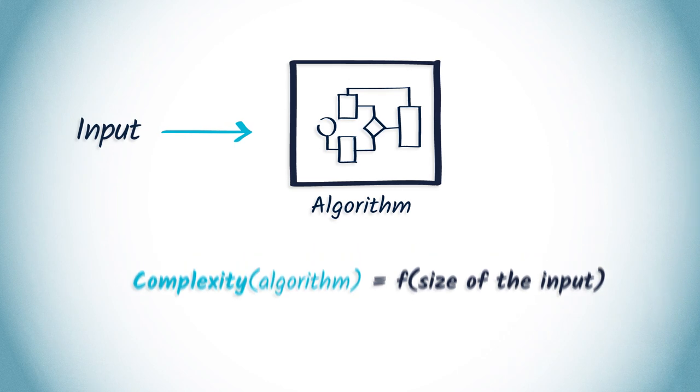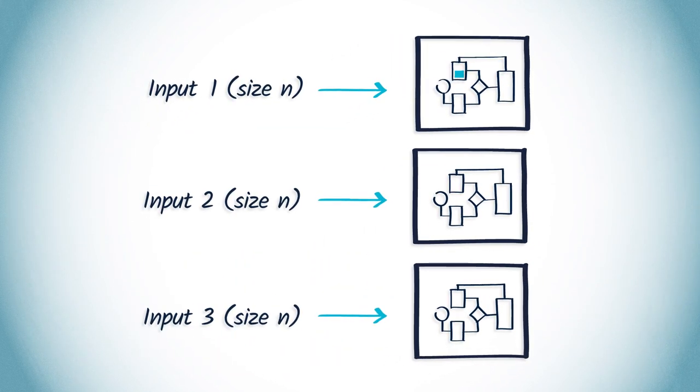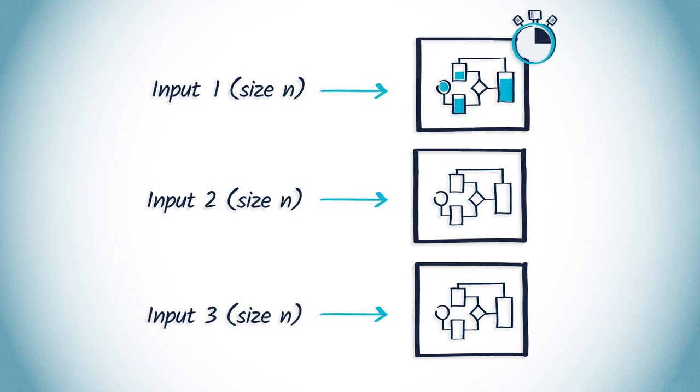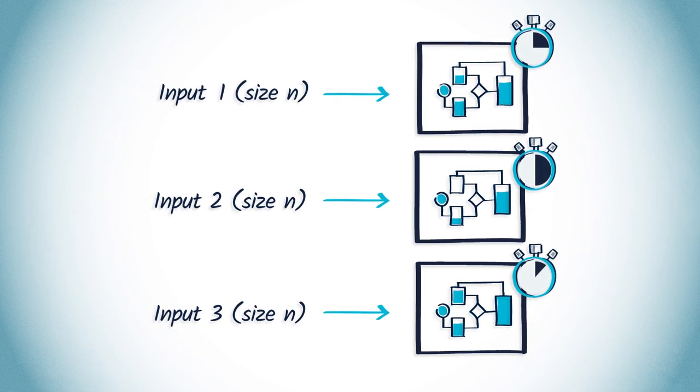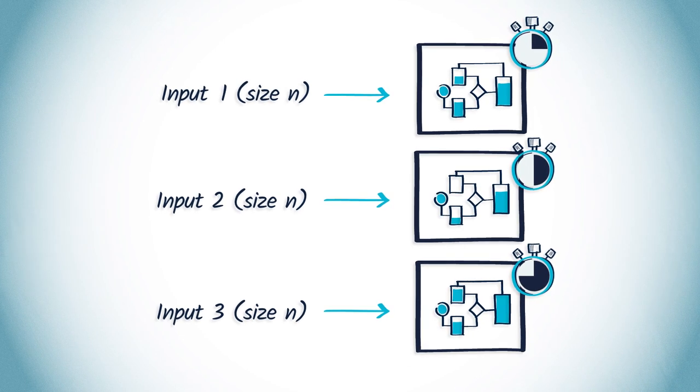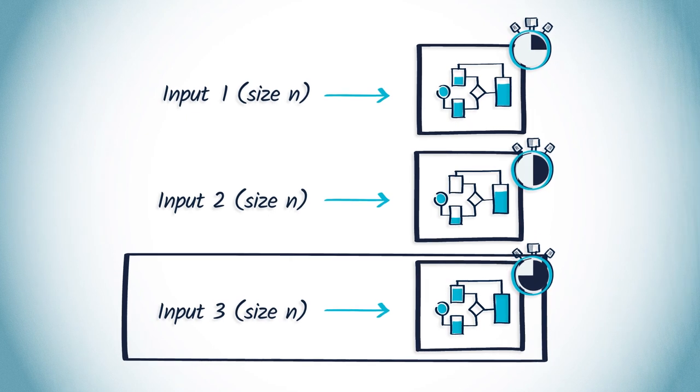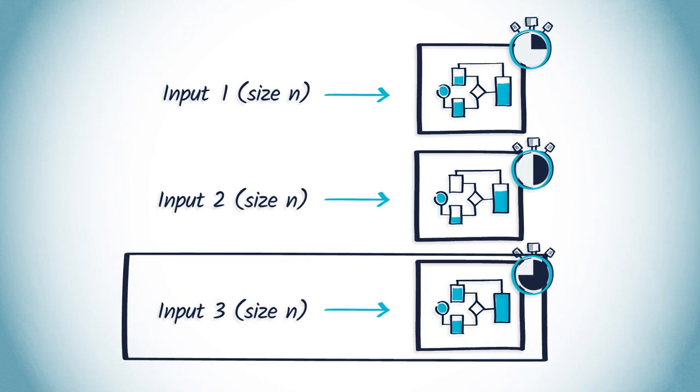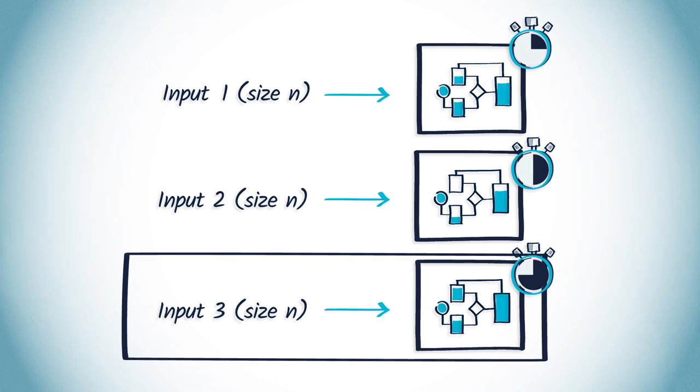It is obvious that different inputs of the same size may cause an algorithm to behave differently. As a consequence, the function describing its performance is usually an upper bound on the actual performance determined from the worst case inputs to the algorithm. So you should remember that complexity contains a notion of worst case.